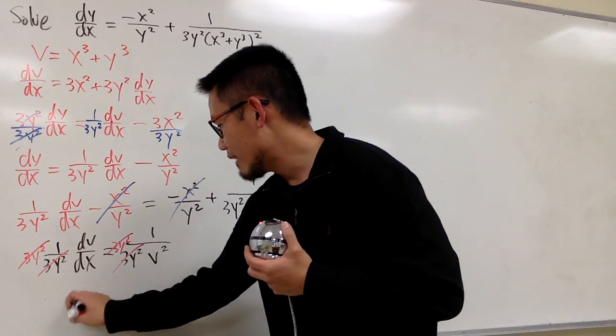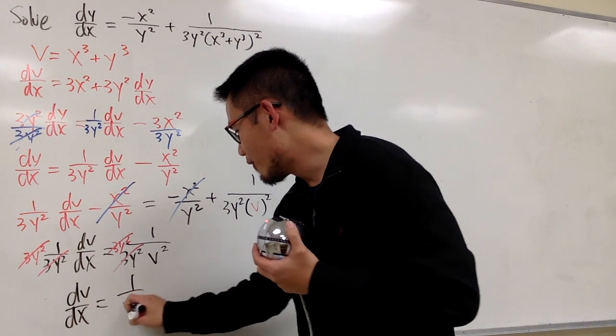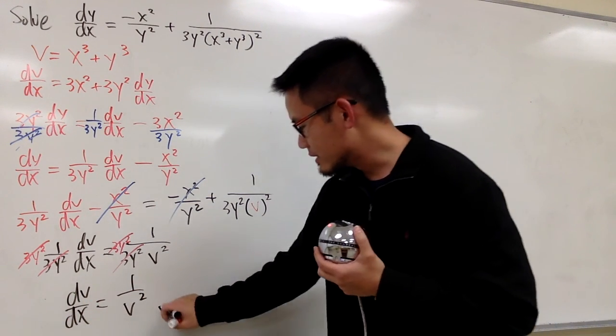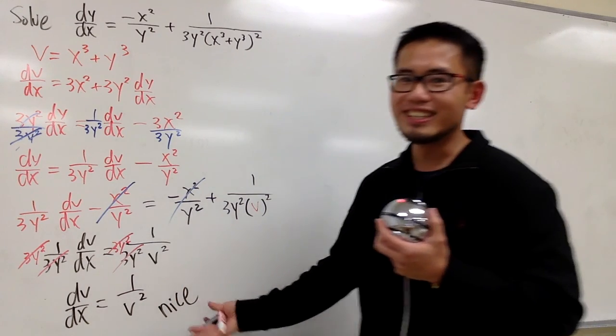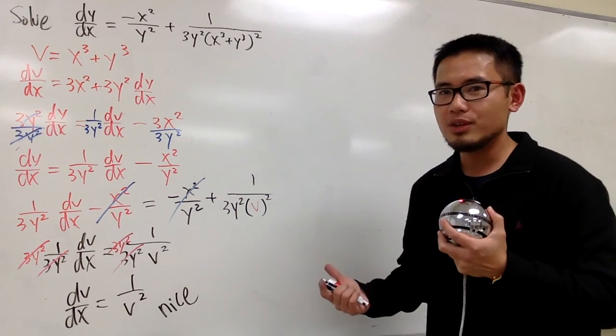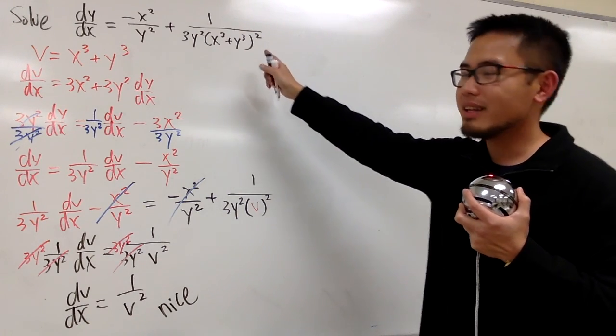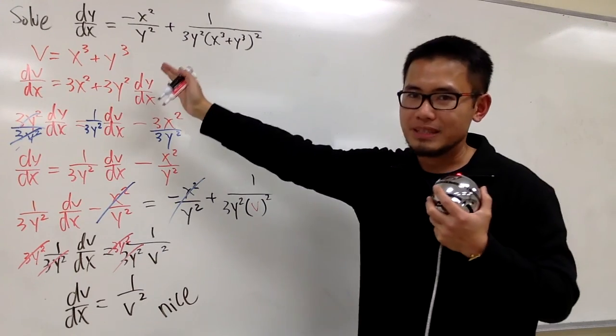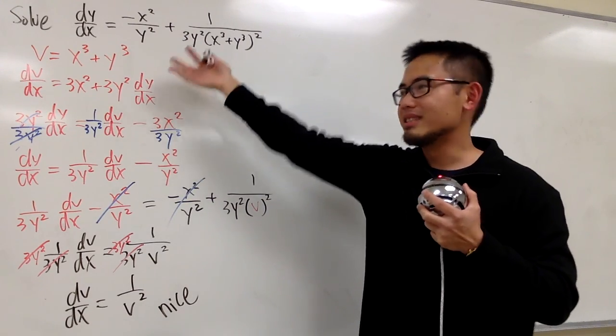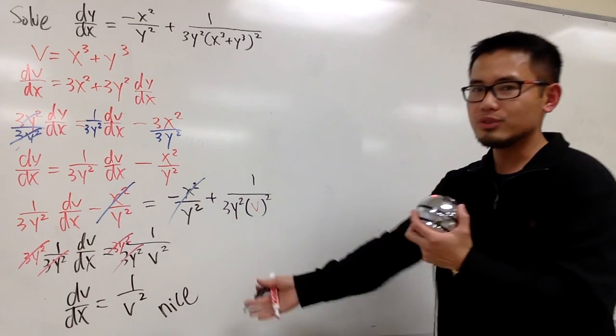All in all, look at, we have dv dx equals to 1 over v squared, just like this. This is so nice, isn't it? And if you continue, I will show you guys another video on how you can come up with this kind of differential equation and with some specific substitution like this. So watch my next video, alright? But I will continue and finish this for you guys first.